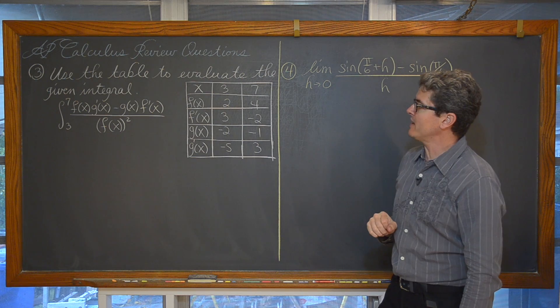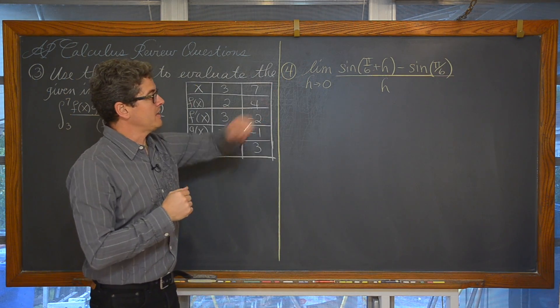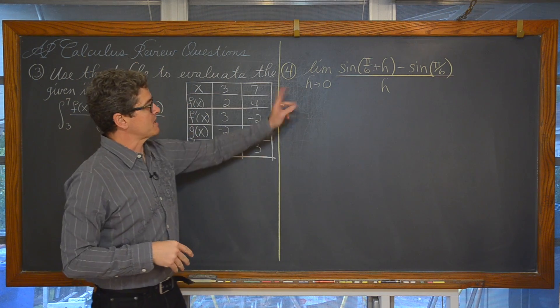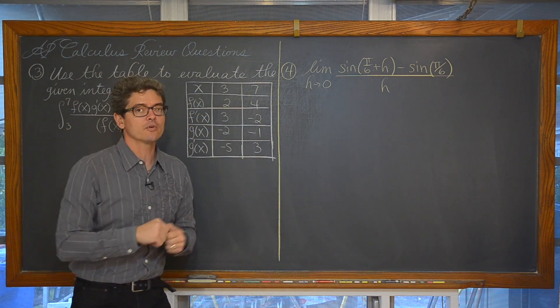We are going to be using the table to evaluate this definite integral and we are going to be finding the limit as h approaches 0 of the sine of pi over 6 plus h minus the sine of pi over 6 over h.